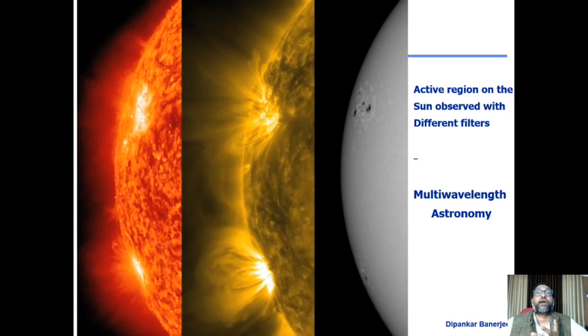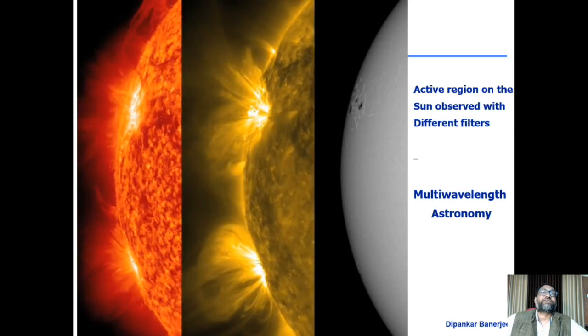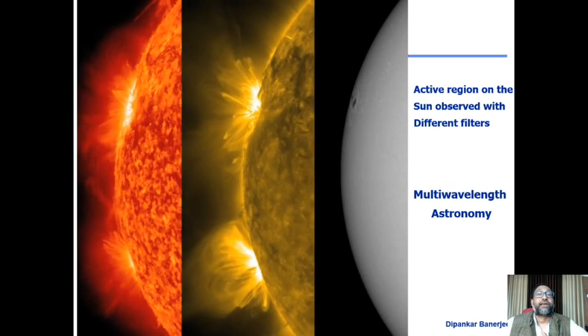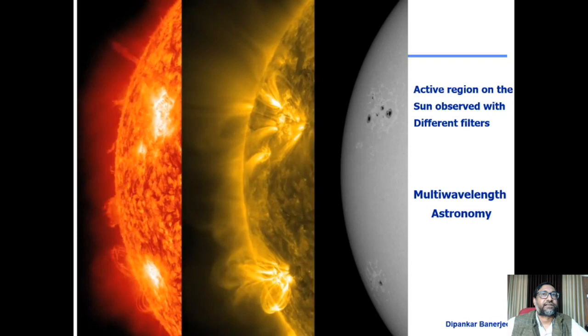Ground-based observation still allows you to see certain things with very great detail because you have a very large telescope with much infrastructure. In space, everything has to be miniaturized, so you have smaller telescopes with certain limitations in terms of data collection and download. This modern technology implemented in space experiments and combined with ground experiments is a very exciting and interesting aspect.